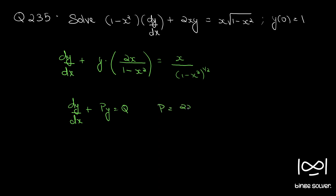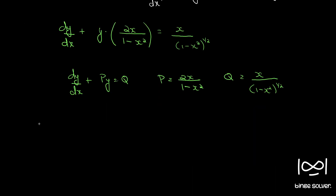Here, P is 2x/(1 minus x squared) and Q is x divided by (1 minus x squared) to the power 1/2, i.e., the square root of (1 minus x squared). Since both are functions of x alone, the given differential equation is a linear differential equation. The integrating factor for such equations is given by e raised to the integral of P dx.